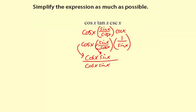Now cosine x, sine x divided by cosine x, sine x is simply 1. So 1 is our final simplification of cosine x, tangent x, cosecant x.